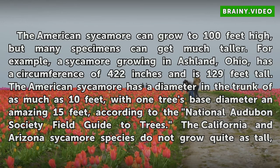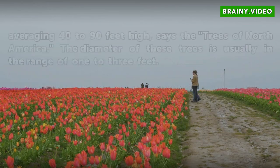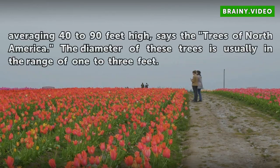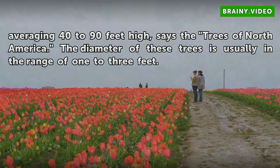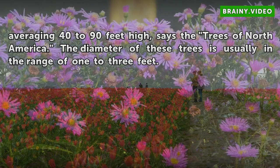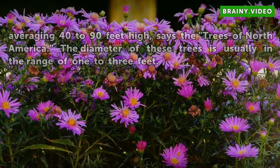According to the National Audubon Society Field Guide to Trees, the California and Arizona sycamore species do not grow quite as tall, averaging 40 to 90 feet high, according to Trees of North America. The diameter of these trees is usually in the range of 1 to 3 feet.